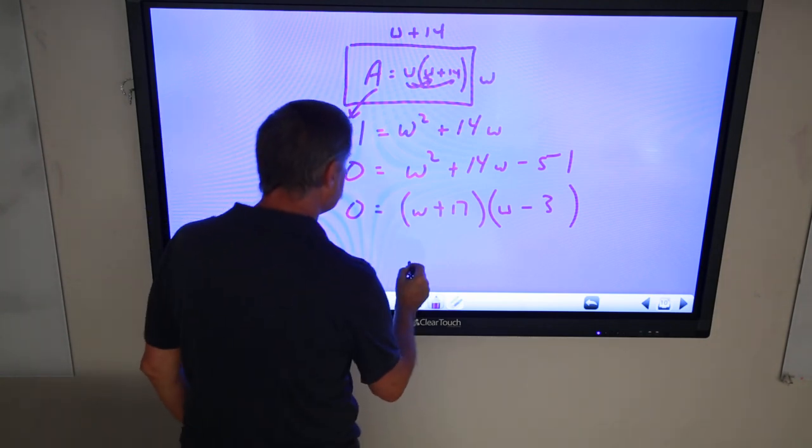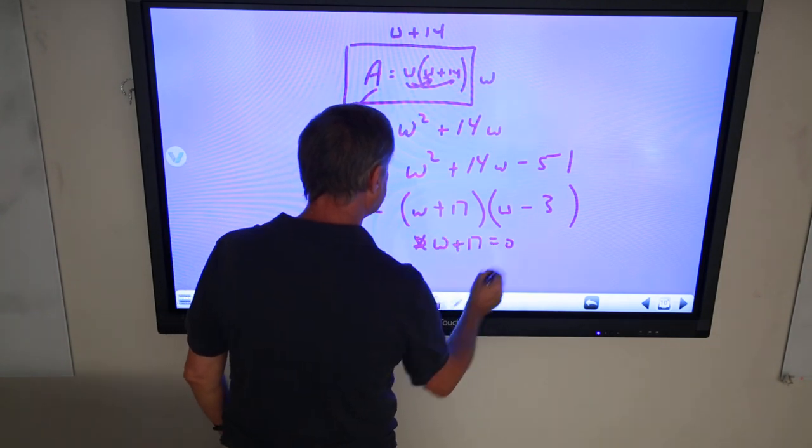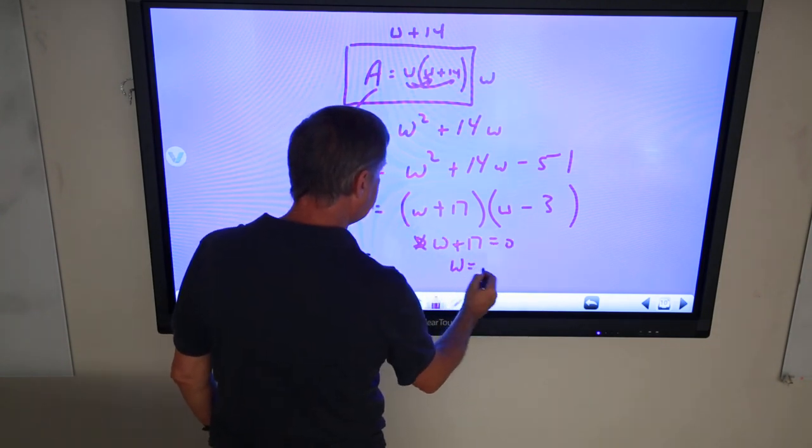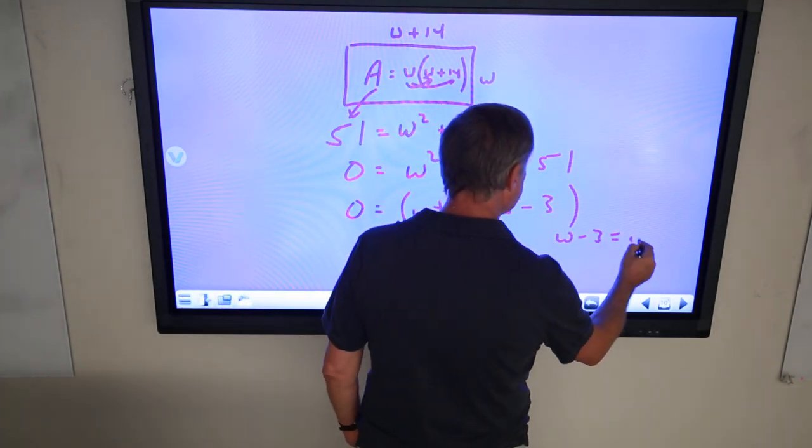Okay. So, I set each one equal to 0. W plus 17 equals 0. W equals negative 17. W minus 3 equals 0. W equals 3.